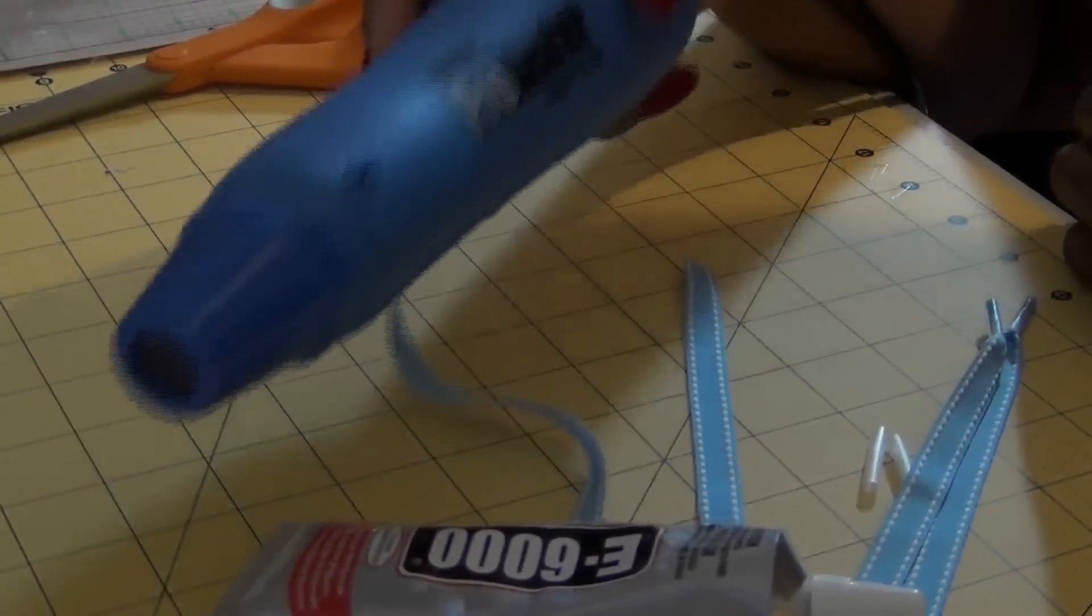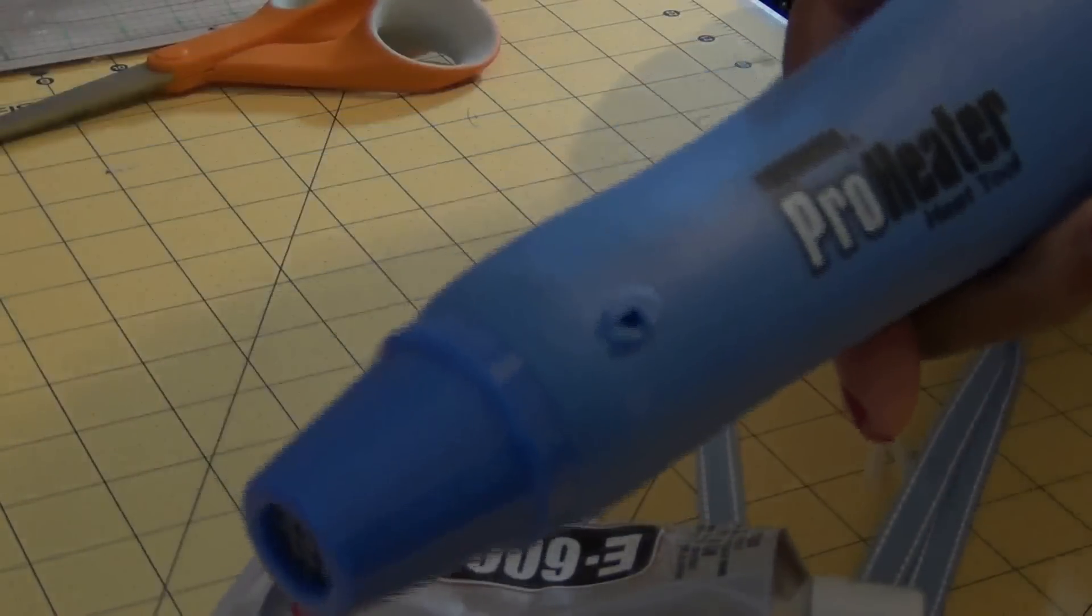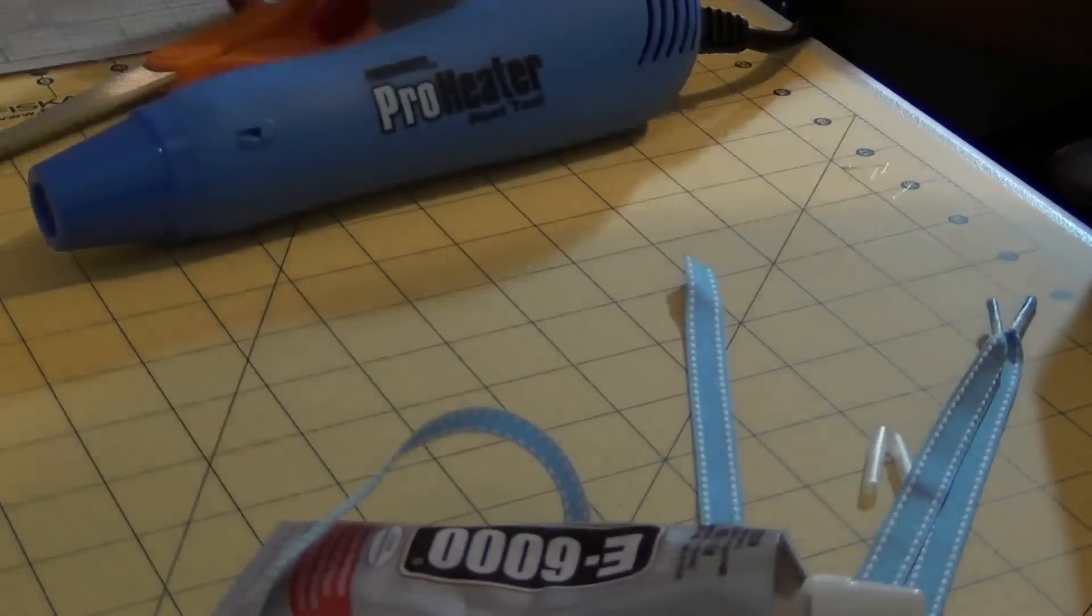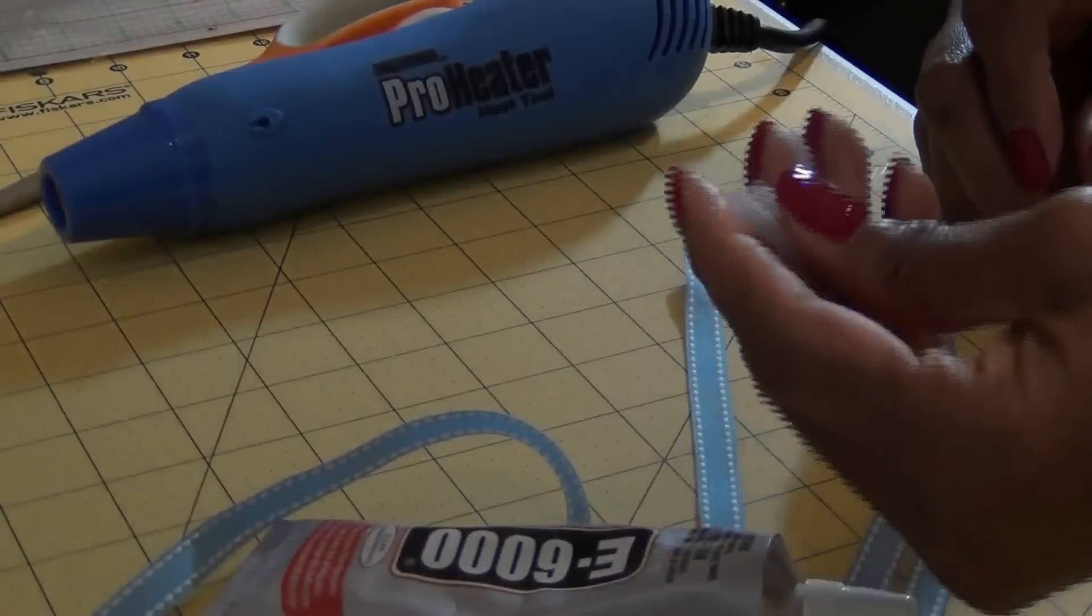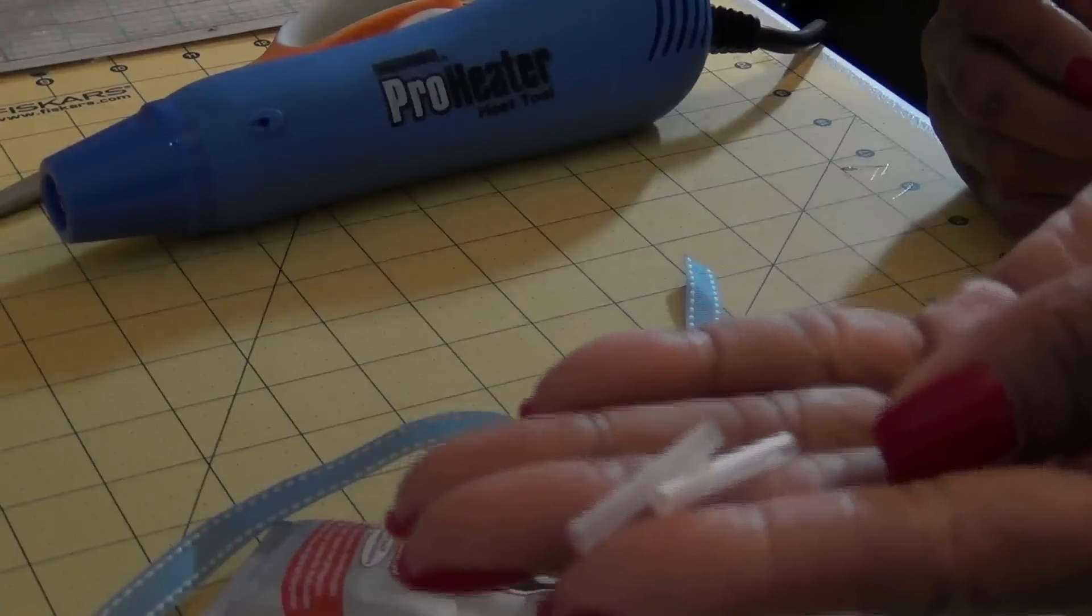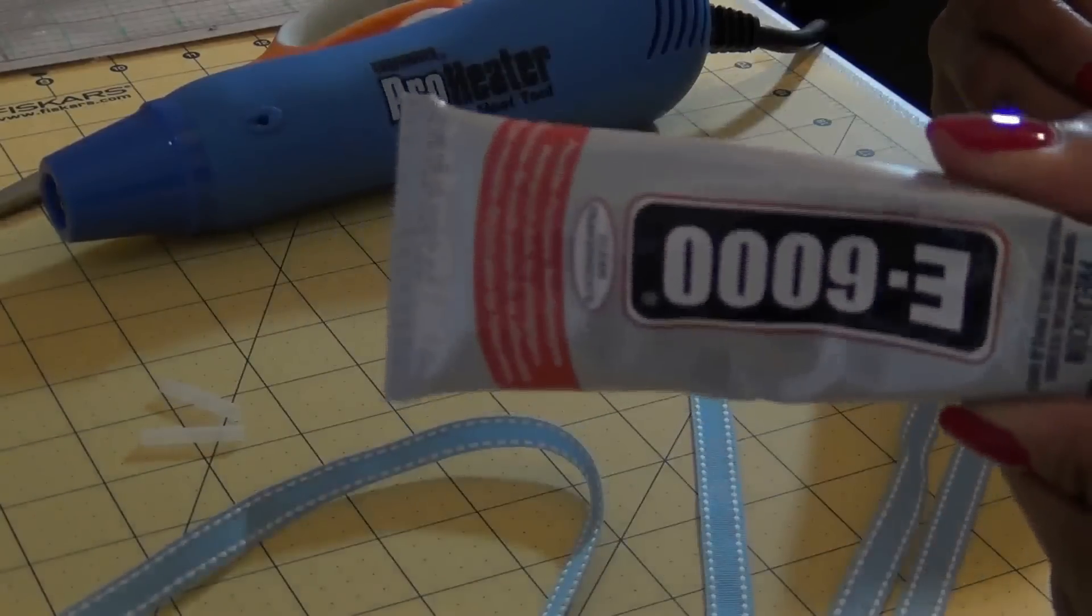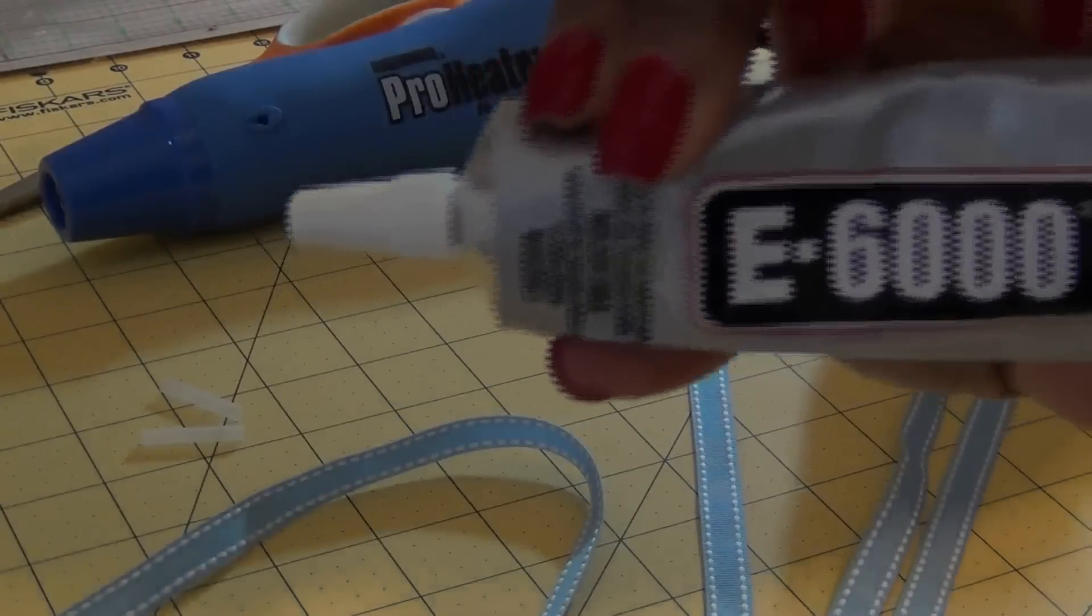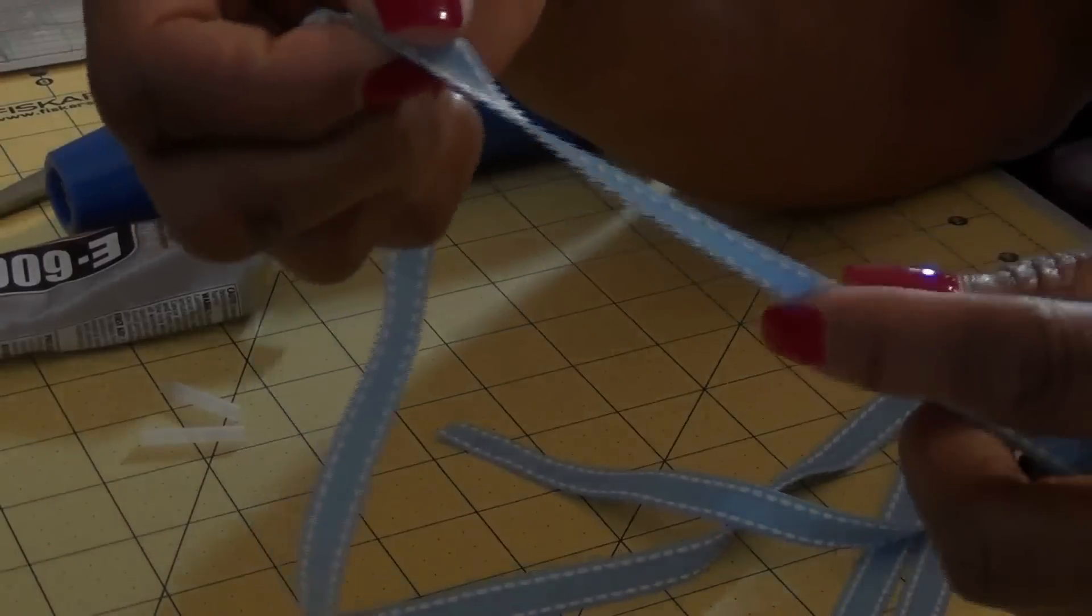The tools you're gonna need: a heater, either a hairdryer or what is called a pro heater. I picked it up at Michael's. You're gonna need a pair of scissors, shrinkable plastic tubes, e6000 glue, and some ribbon.